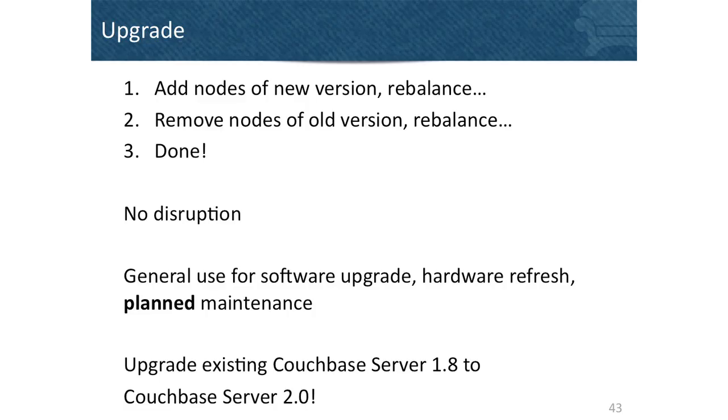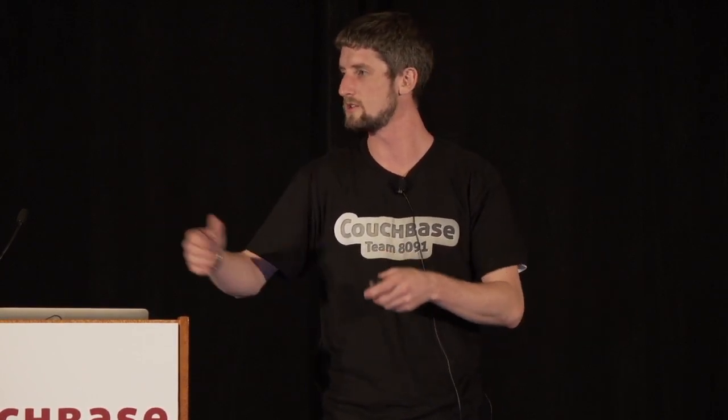Upgrades — whether minor or major version — are well-supported and easy to perform. Add a node of the new version, remove a node of the old one; you can do that as one swap operation and continue for all nodes in your cluster, all without taking the application down or changing performance. Use this for upgrades, hardware refreshes, and planned maintenance. We allow going from 1.8 to 2.0 — you can add 2.0 nodes to a 1.8 cluster. Once all nodes are on 2.0, you get the new functionality; you need a homogeneous cluster to use views.